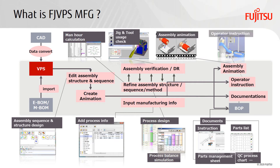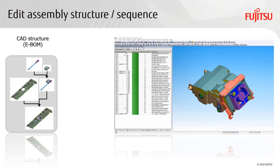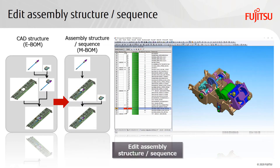Let's take a look at the functions of FJVPSMFG, which covers the entire production preparation work. Change the CAD data structure to the structure and procedure for assembling the product. Select the parts in the order of disassembly from the assembled 3D model and rearrange them.